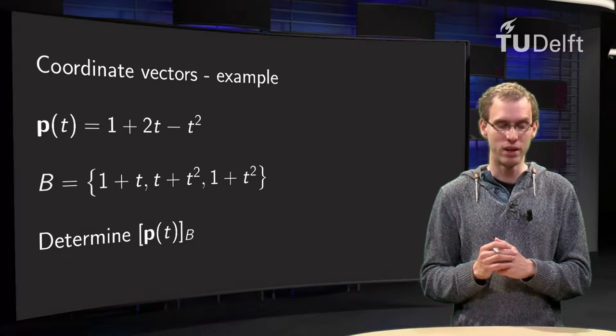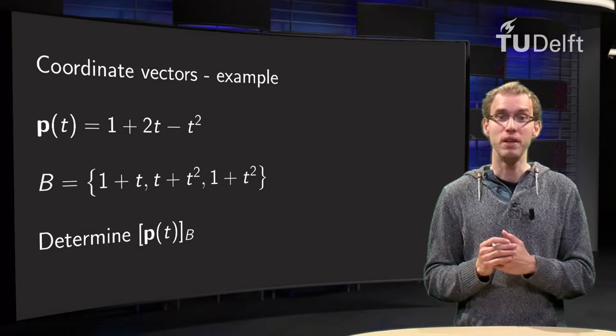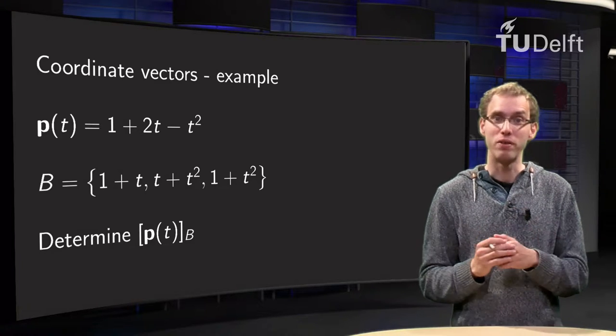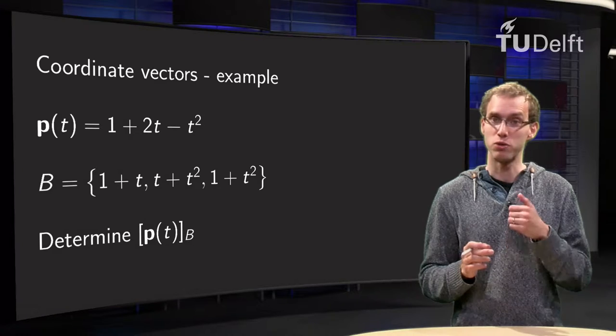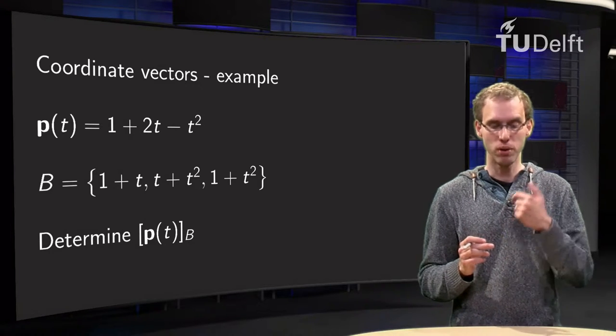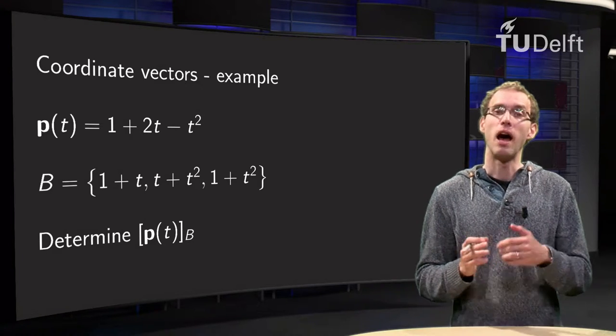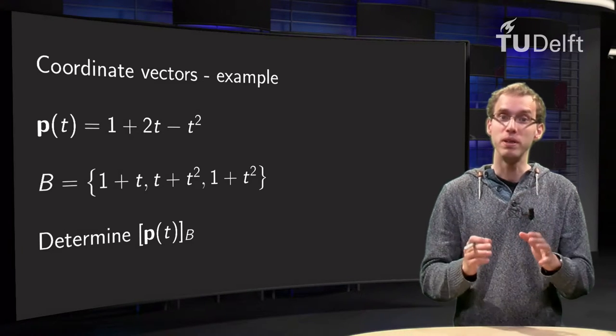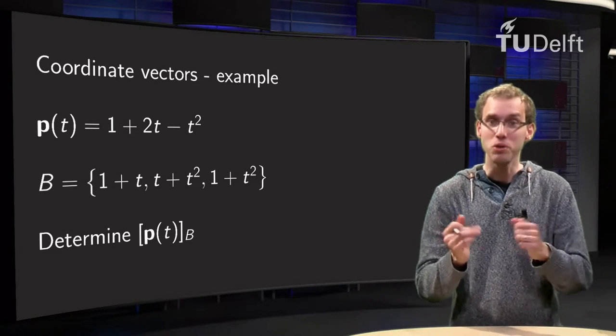We have an example over here. Our p is 1 plus 2t minus t squared, but now we will have another basis. Basis B contains the vectors 1 plus t, t plus t squared, and 1 plus t squared. We want to determine the coordinate vector of p with respect to this non-standard basis.